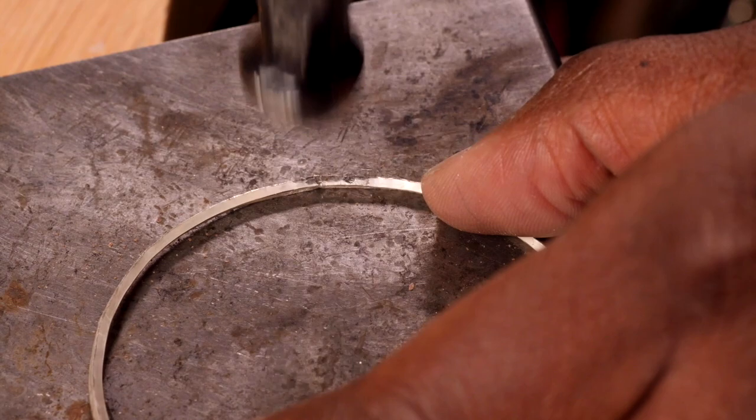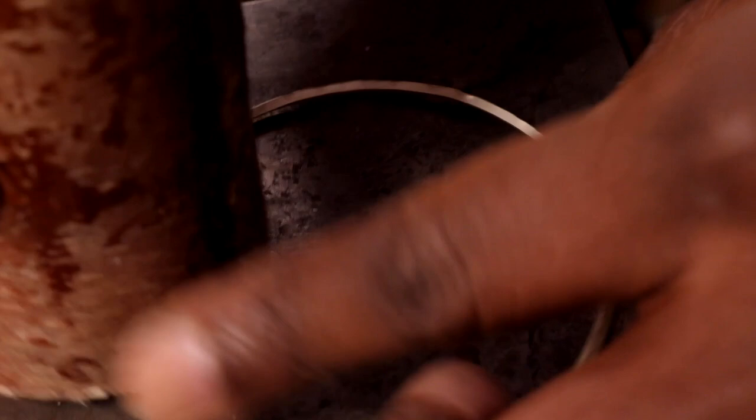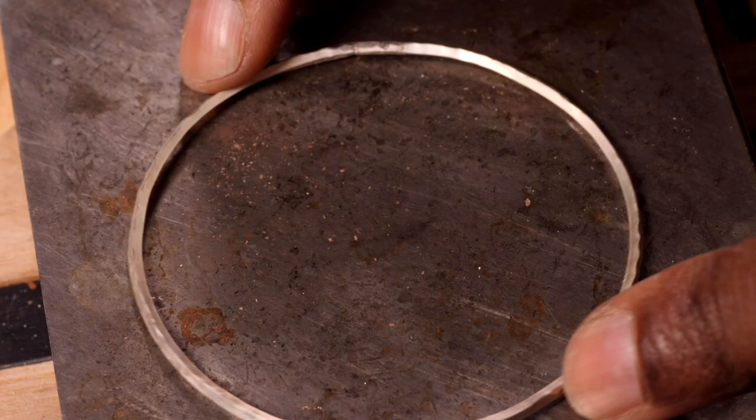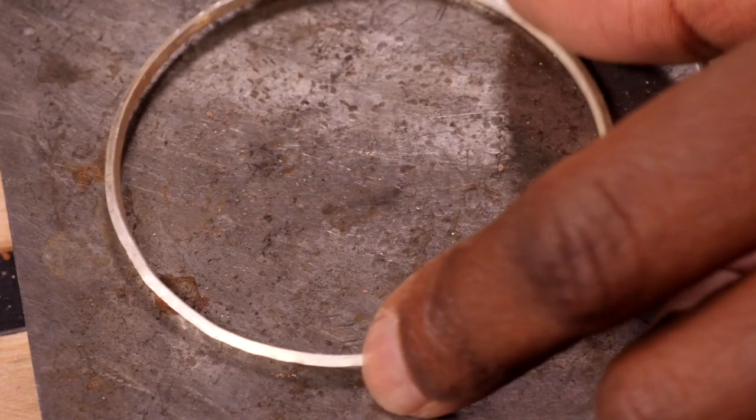This just spreads the solder if you've put too much. Just bang it again, just to make sure it's nice and flat. And when you've got it on the block, this is where you can look to see whether it's a perfect round. And if it's not a perfect round, you can just put it back on your bangle mandrel and round it up again using the rawhide hammer.